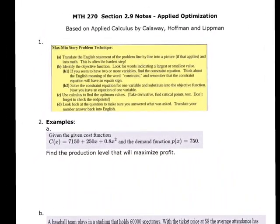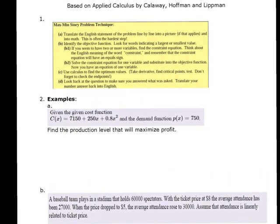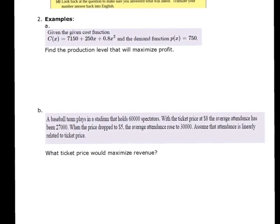In section 2.9 we are going to look at applied optimization, which is based on finding maximum and minimum values from the last section. Now we'll see what those are used for — for example, in business you might want to maximize profit and revenue but minimize cost. The max-min story problem technique says: figure out what you need to minimize or maximize, make sure you have a function for it, take the derivative, set it equal to zero, and solve.